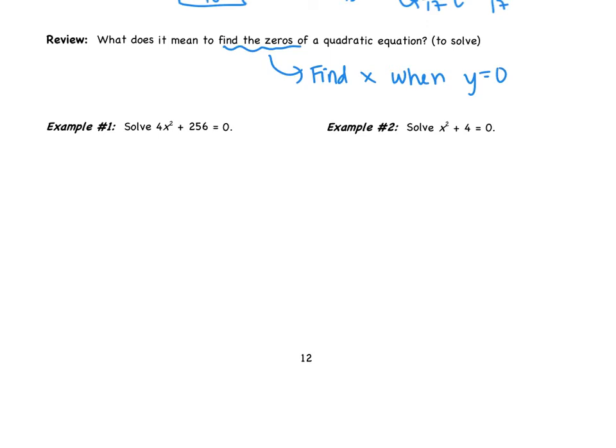So find all the x values for where y equals zero. If we look at that example number one, it's already set equal to zero for us. We have a few different options. If we remember, the first thing we talked about at the very beginning of the chapter is we factored, then we did the square root method, we also looked at completing the square.